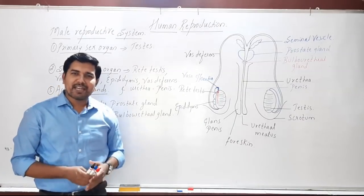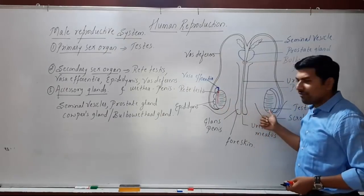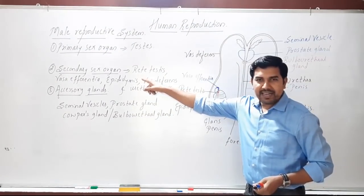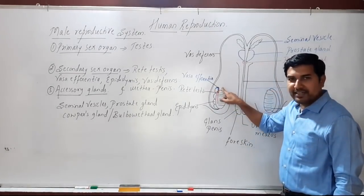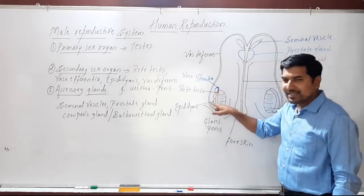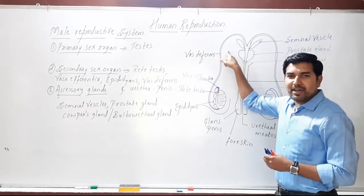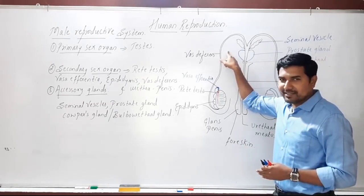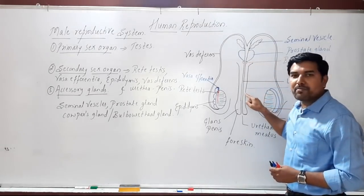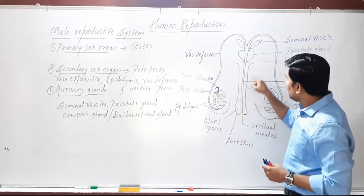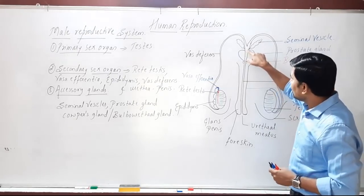To summarize the male reproductive system: the primary sex organ is the testis — a pair of testes that produce sperms. Secondary sex organs include the rete testis, vasa efferentia, epididymis, vas deferens, and urethra. The vas deferens measures around 35 to 40 centimeters in length and joins the urethra. The urethra is the common passage for urine and sperm in the male reproductive system.